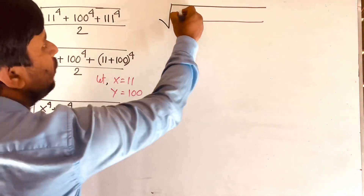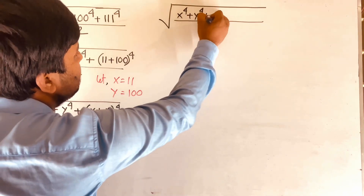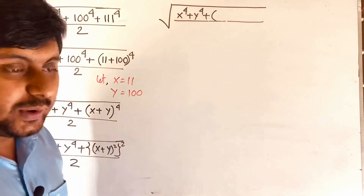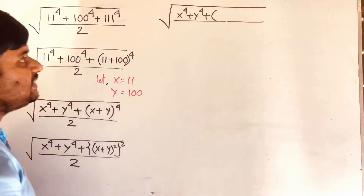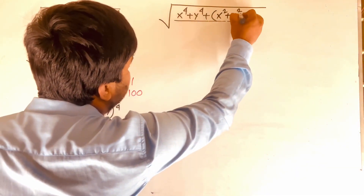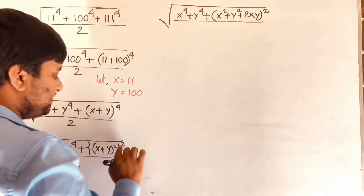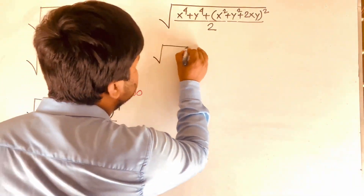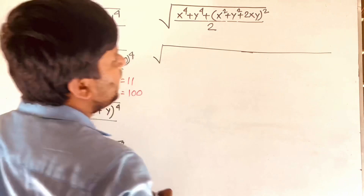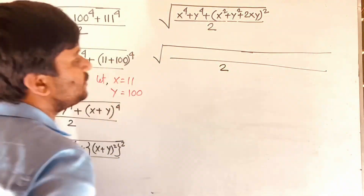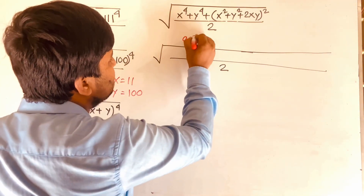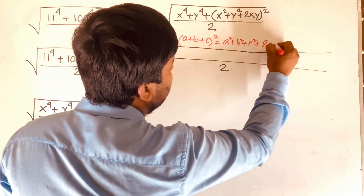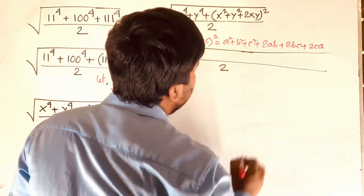Then I can see easily square root of x to the power 4 plus y to the power 4 plus, and in this case, if you think of it as a and b, then (a plus b) squared equals a squared plus 2ab plus b squared. So according to this rule, it will be (x squared plus y squared plus 2xy) to the power 2, divided by 2. Now I apply the formula: (a plus b plus c) squared equals a squared plus b squared plus c squared plus 2ab plus 2bc plus 2ca.